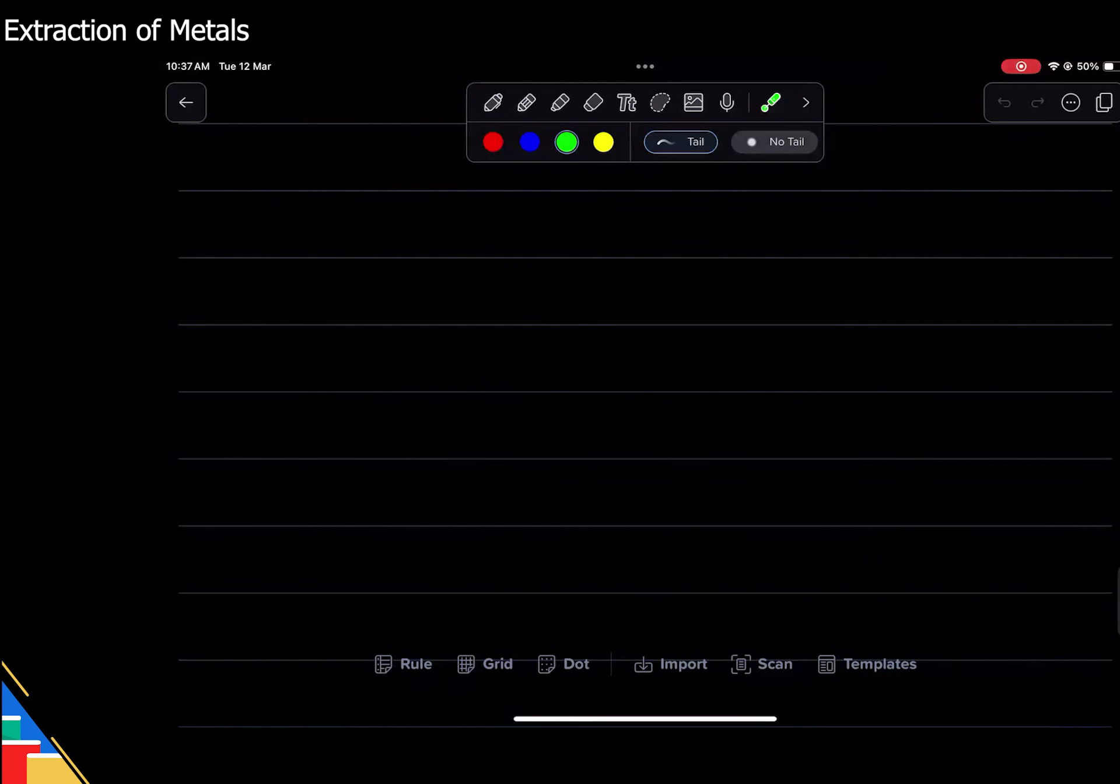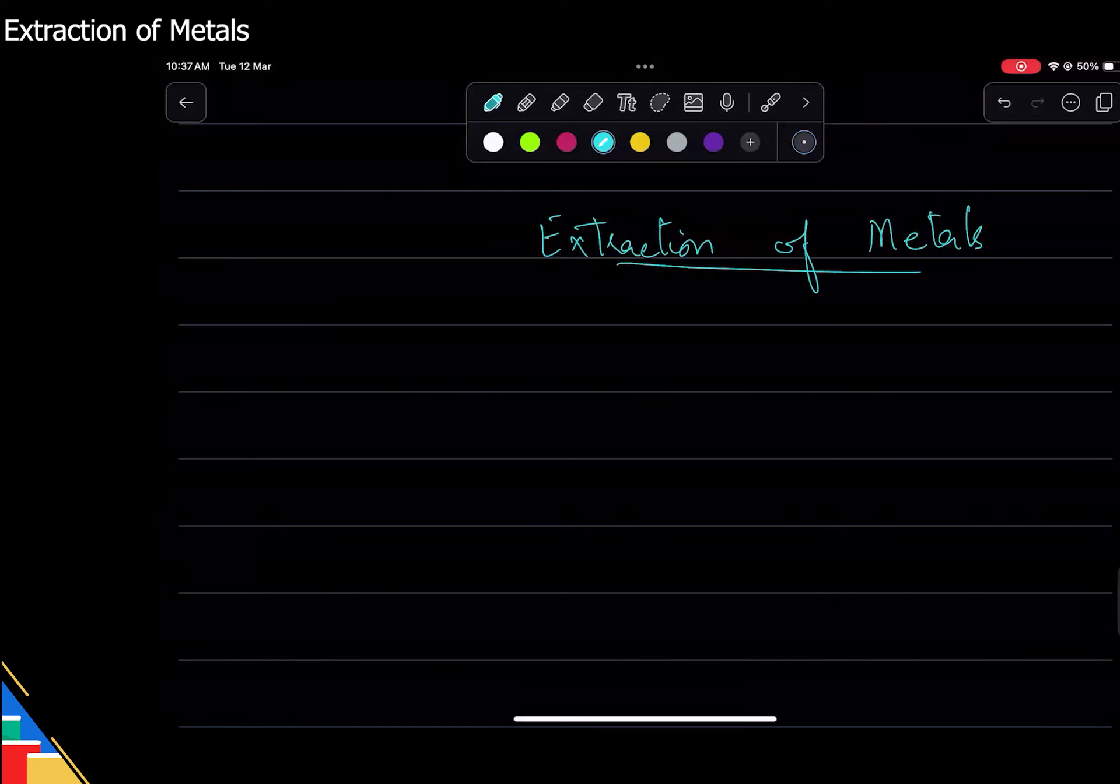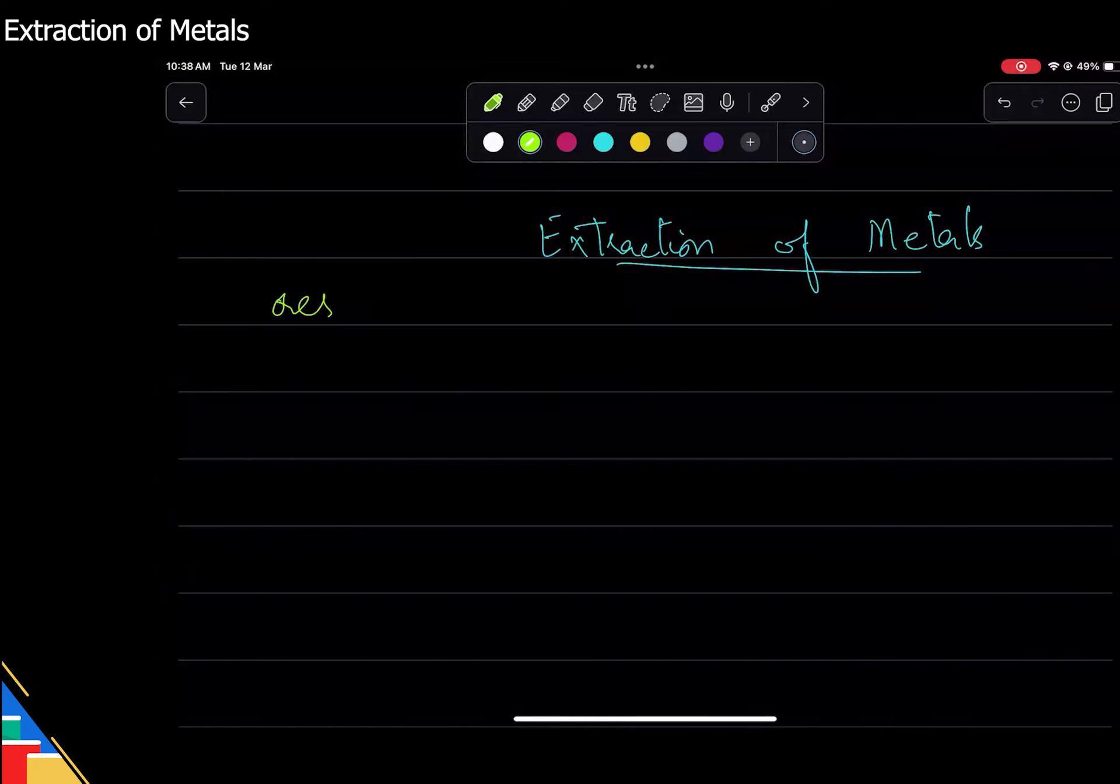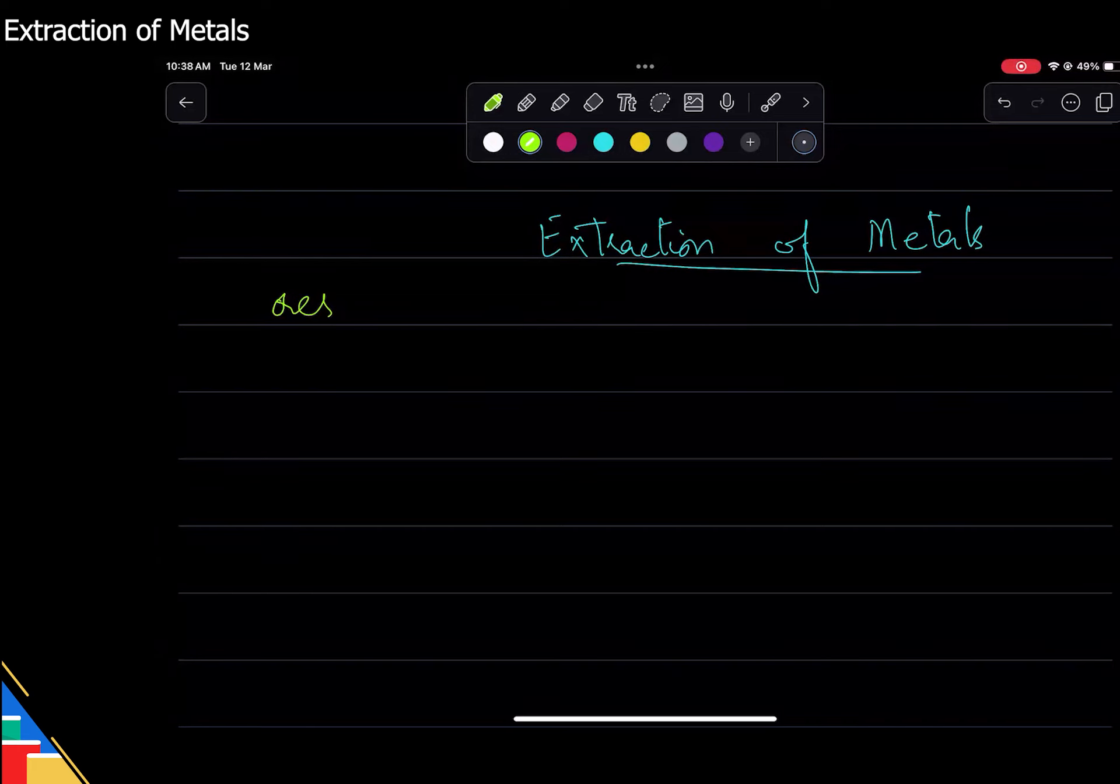Okay, so we talked about metals, non-metals, that kind of thing. So today we are going to talk about extraction of metals. Basically the idea is how do we get metals from their ores. Ores are the natural rocks or natural compounds or a mixture in which we get the ore.